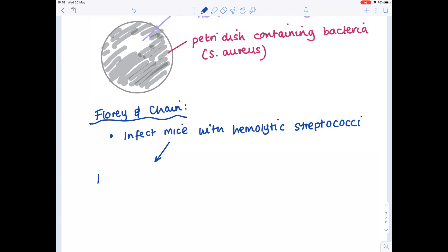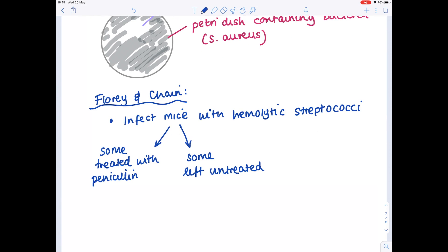So Florey and Chain decided to infect mice with hemolytic streptococci. Some of these mice were treated with penicillin, while others were left untreated. And guess what? The ones which were treated with penicillin survived, whilst unfortunately the ones which were left untreated died.